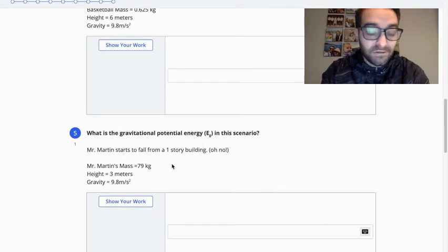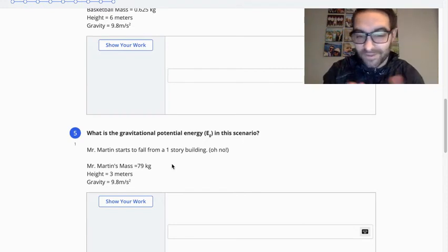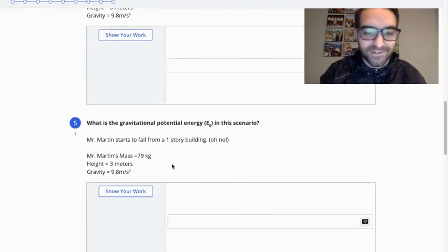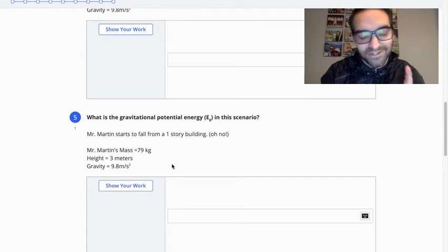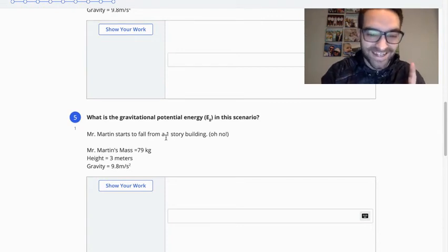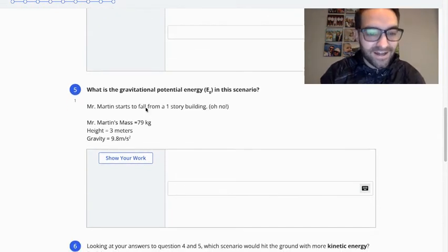So it has potential energy. Then second scenario, myself, I'm about to fall from a one-story building. Maybe I'm about to jump. So what is then my potential energy? Don't worry. I did not do this. Well, maybe when I was younger I did, but not recently. So I'm okay. But you can calculate that.